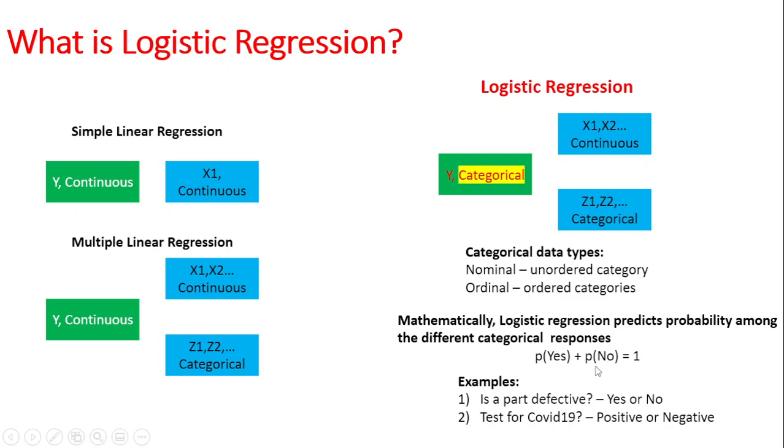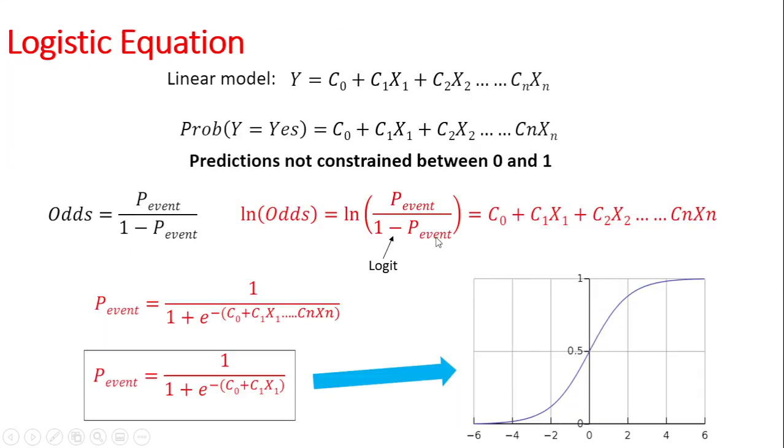For example, if you are working in an industry and trying to determine if a part is defective, that's a two-level category - it can be either yes or no. Or if you are taking a test for COVID, it can be either positive or negative. This is what you do in logistic regression.